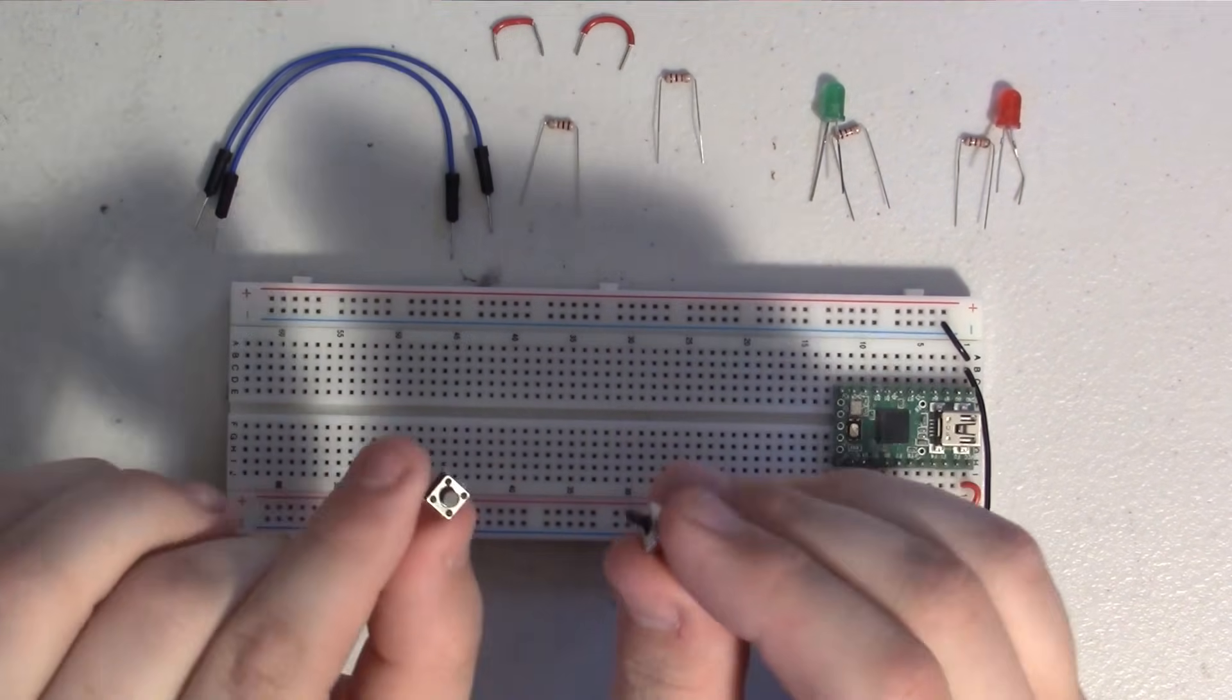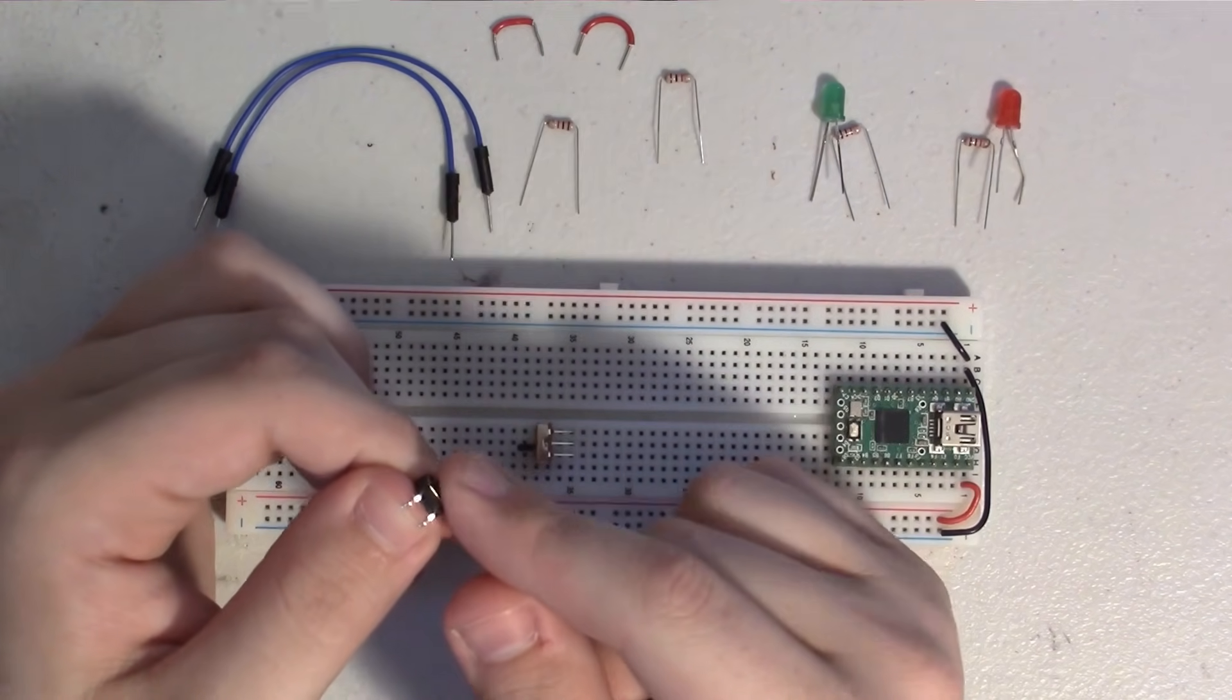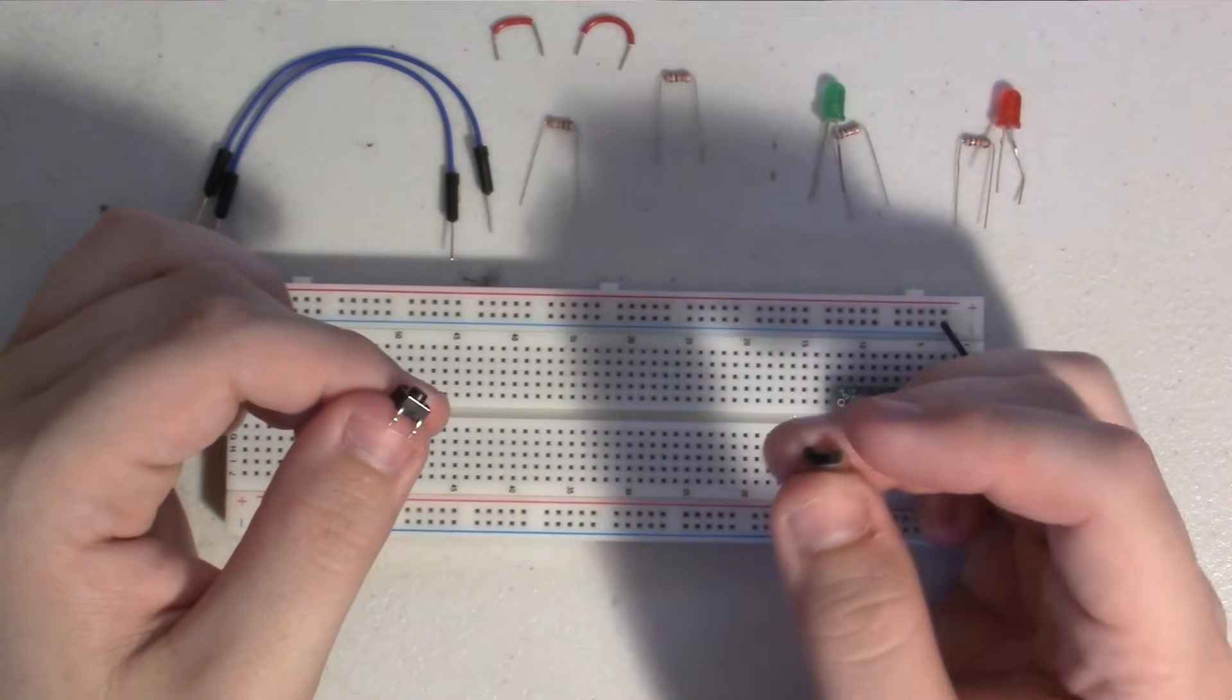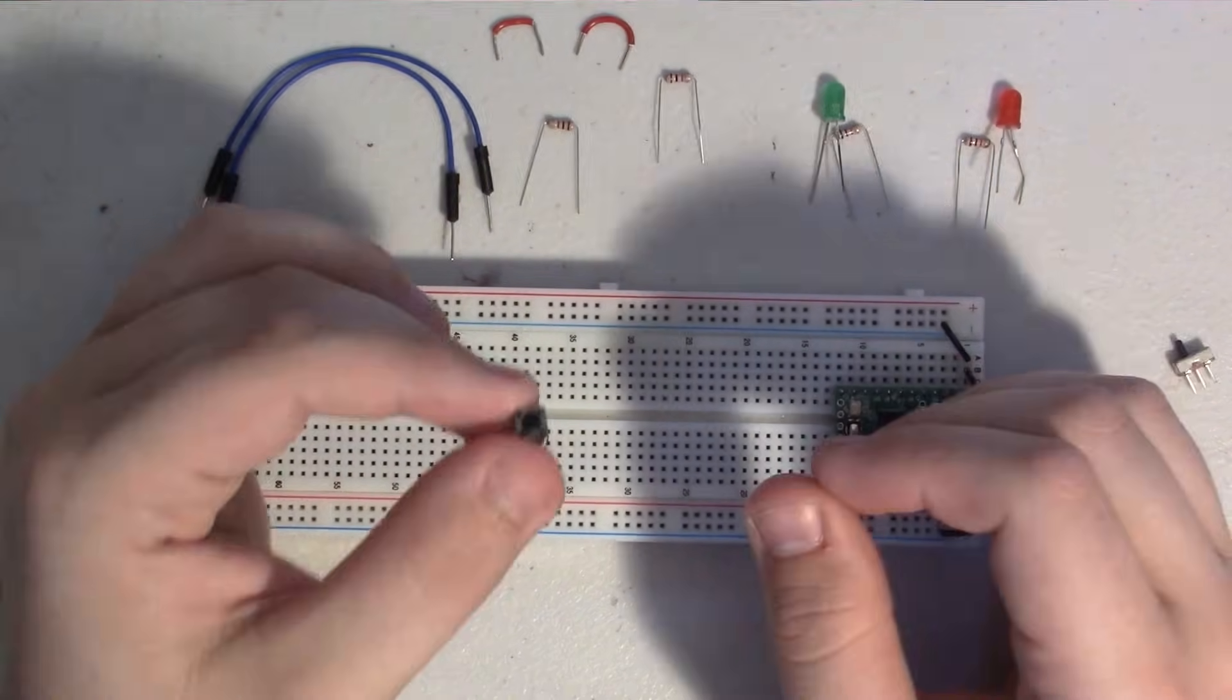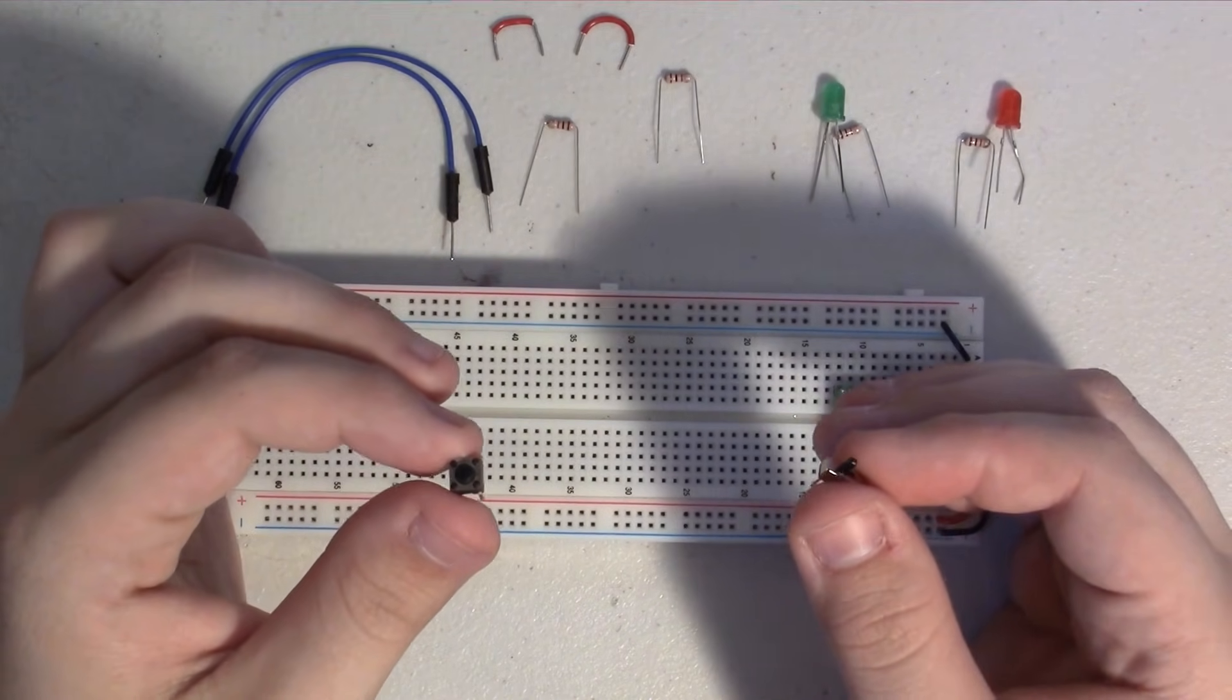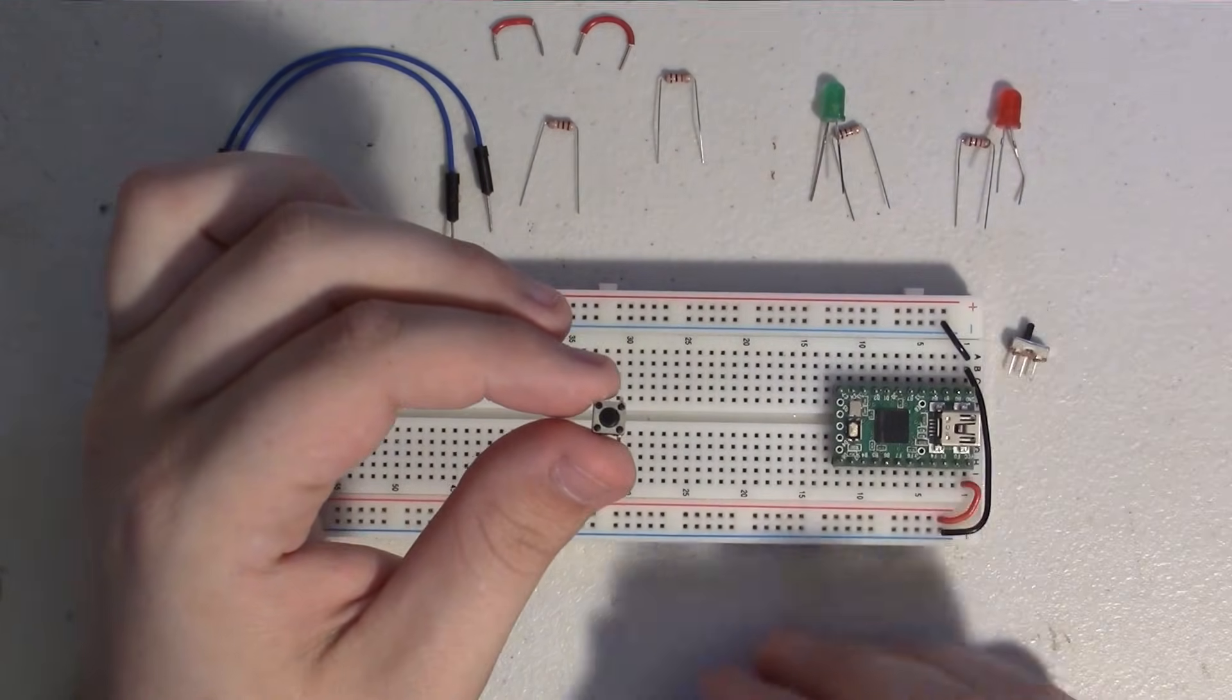Now, buttons and switches are basically the same thing electronically. They make or break a connection based on either pushing or switching the switch. So wiring up the button and switch are basically the same, so I'm going to start out with the button and then I'll just do the switch right after.